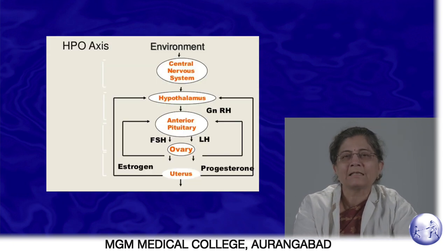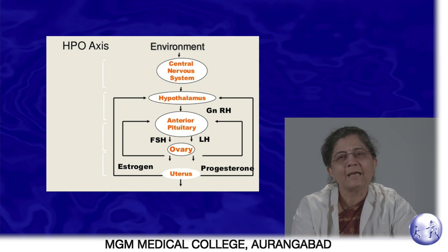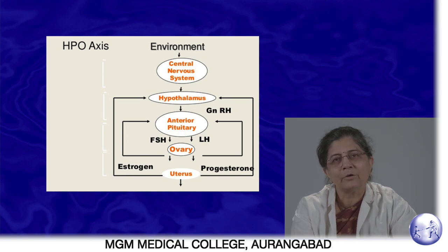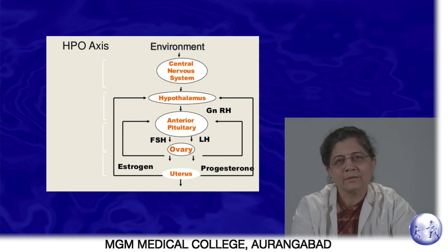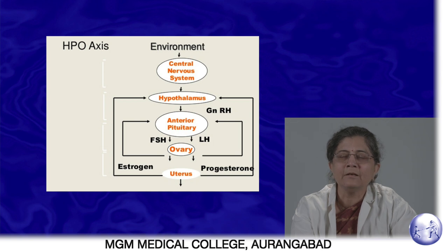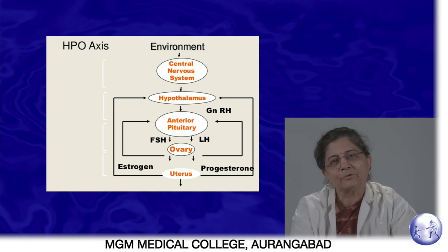Before we go further with this condition, we must understand how the menstrual pattern is governed. It is called the HPO axis or hypothalamo-pituitary-ovarian axis. The environment around us controls the cerebral cortex, which in turn gives the signal to the hypothalamus. The hypothalamus then releases gonadotropin-releasing hormones, which act on the anterior pituitary.